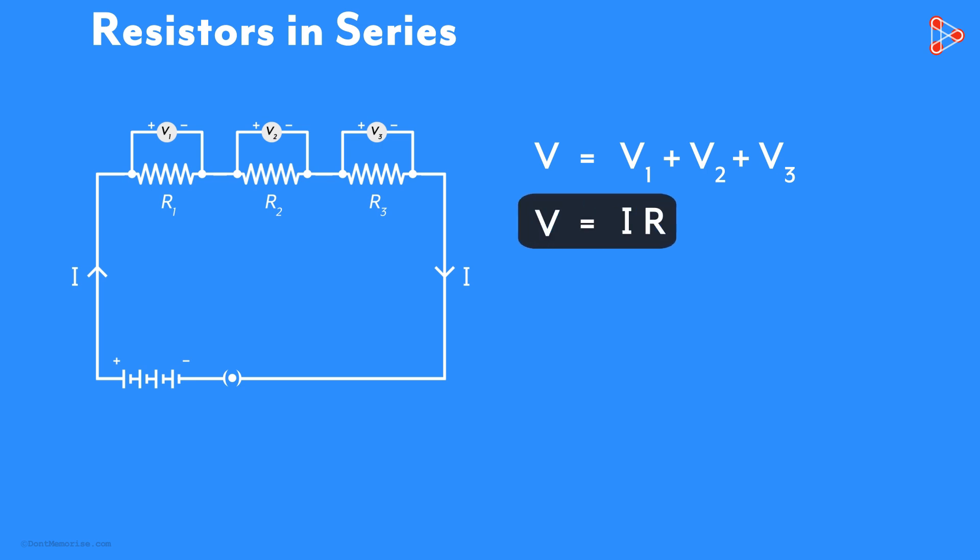This was the entire circuit. Can you try applying Ohm's law to each resistor separately? It's easy. For the first resistor, the potential difference is V1 volts. The current flowing through it is I amperes and the value of the resistance is R1 ohms.